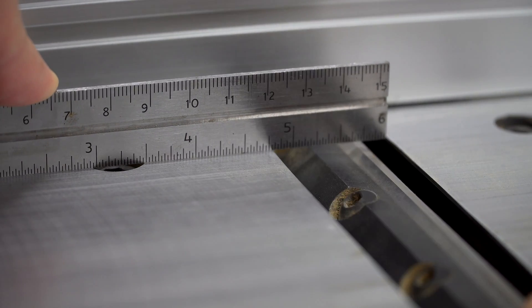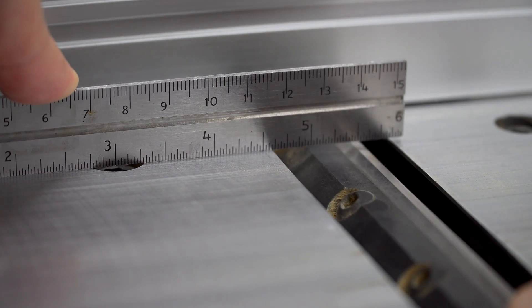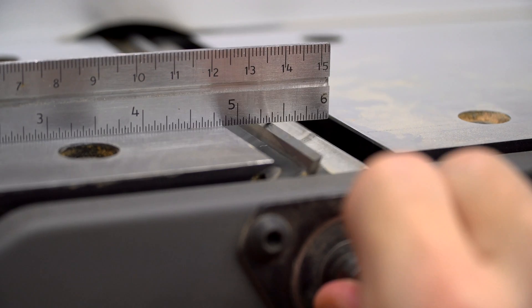The blade should grab the ruler and pull it forward just slightly, let's say by just about an eighth of an inch. Be sure to check it at both ends of the blade.